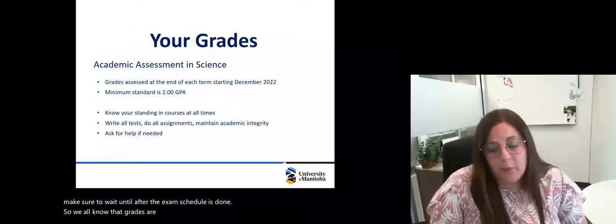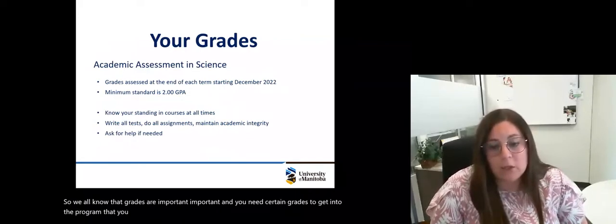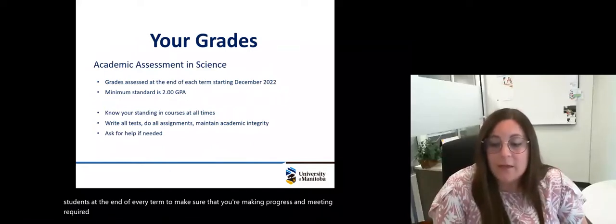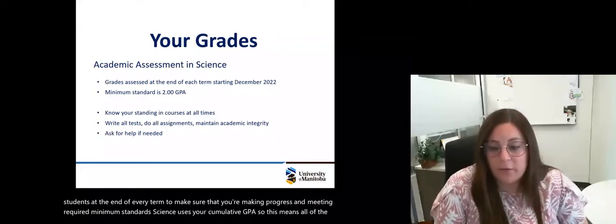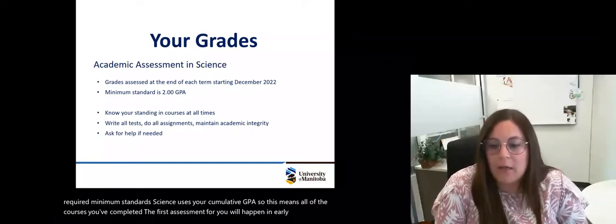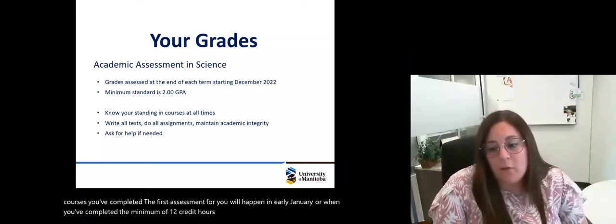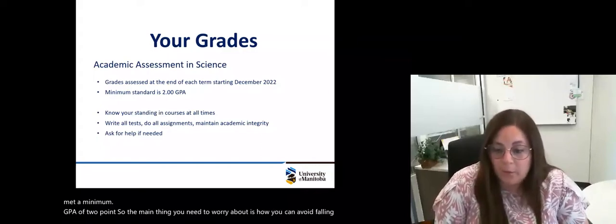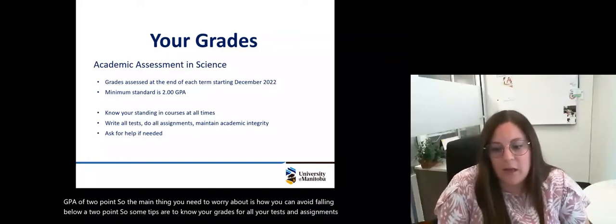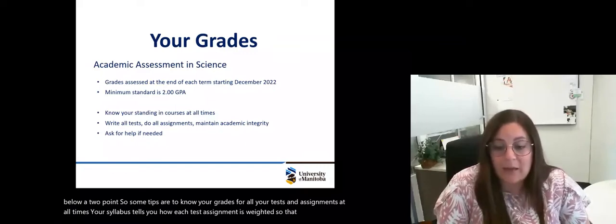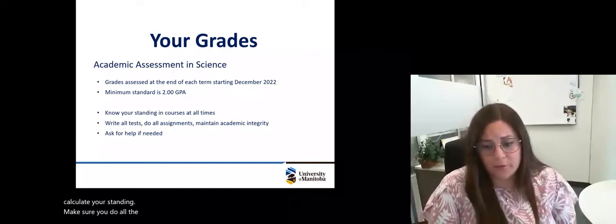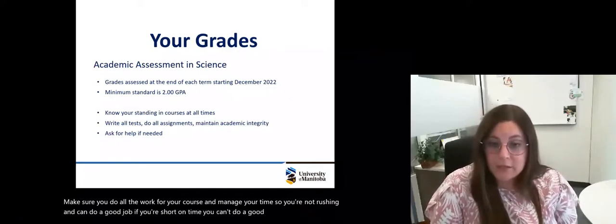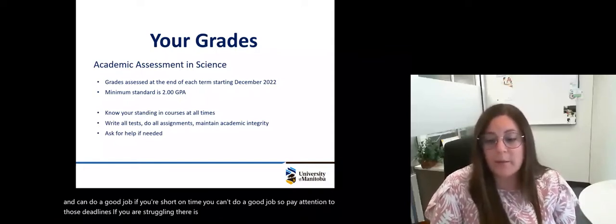We all know that grades are important and you need certain grades to get into the program that you want and to graduate with your degree. In science, we assess all students at the end of every term to make sure that you're making progress and meeting required minimum standards. Science uses your cumulative GPA. The first assessment for you will happen in early January or when you've completed a minimum of 12 credit hours, and what we're looking for is that you've met a minimum GPA of 2.0. So some tips are to know your grades for all your tests and assignments at all times. Your syllabus tells you how each test assignment is weighted. Make sure you do all the work for your course and manage your time so you're not rushing. If you are struggling, there is help available, but you need to ask for it.